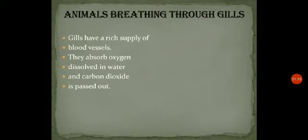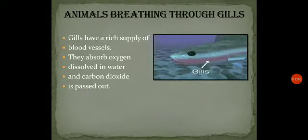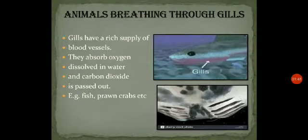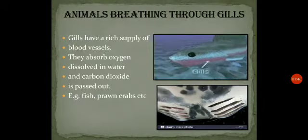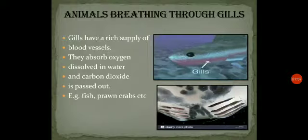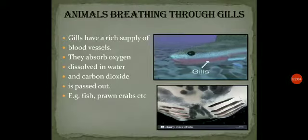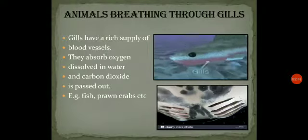Now we will talk about gills. Gills are present in fish and other aquatic animals. Gills are openings which allow water to enter the body of the fish, and gills are rich in blood vessels. Blood in the blood vessels absorbs oxygen from the water and releases carbon dioxide into the water.